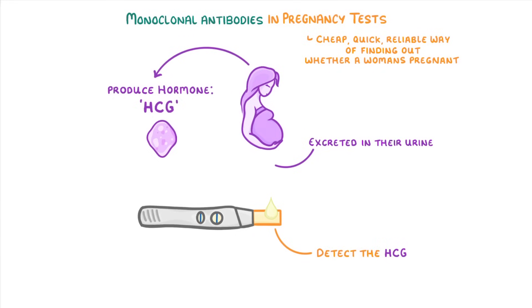So by weeing on the test strip, which is the orange part at the end, the test can tell a woman whether there's HCG in her urine, and thus whether she's pregnant.